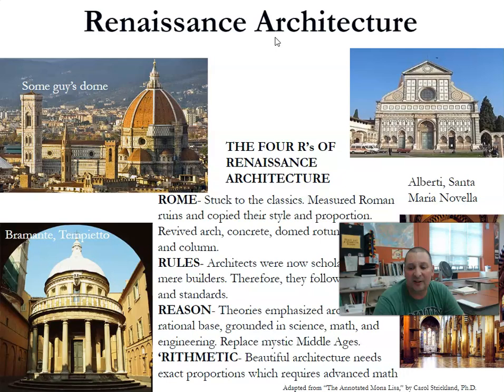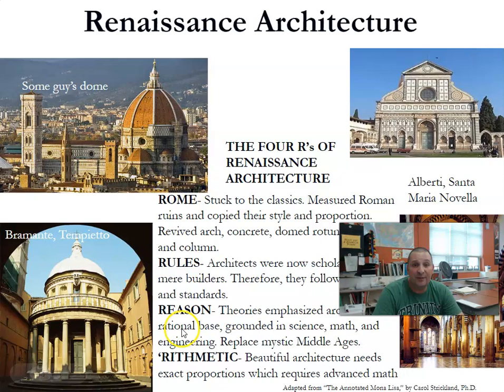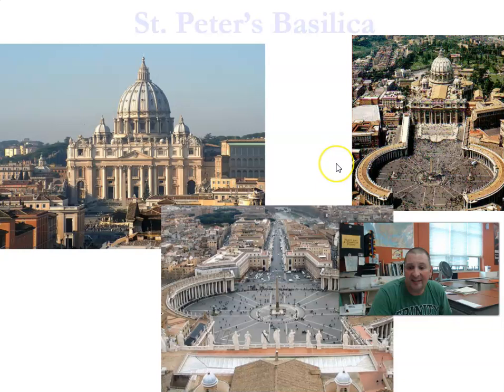From a book called The Annotated Mona Lisa by Dr. Carol Strickland, she calls it the four R's of Renaissance architecture: Rome, rules, reason, and arithmetic. Everything we see in the Renaissance follows these ideas. And St. Peter's Basilica, inside and outside, is a great example of Renaissance architecture. You have the large dome and everything is purposeful.